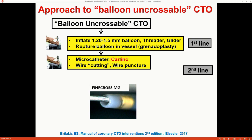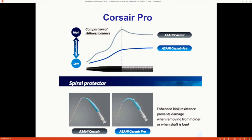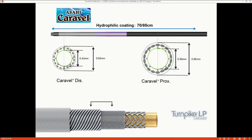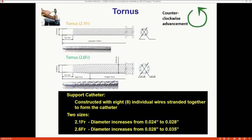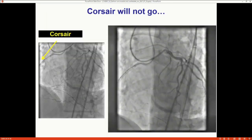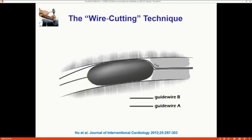If that doesn't work, second-line strategies include modifying the plaque with various microcatheters, the Carlino technique, or wire cutting. We have multiple microcatheters: the Corsair, Corsair Pro with a softer tip, the lower-profile Caravelle, Turnpike and Turnpike LP that you can torque in multiple directions, the Micro-14 with the longest length, and the Tornus designed specifically for this — advanced counterclockwise. The wire cutting technique involves advancing two wires, inflating a balloon over the first wire against the lesion, then pulling back the second wire to create a cutting effect on the proximal cap.